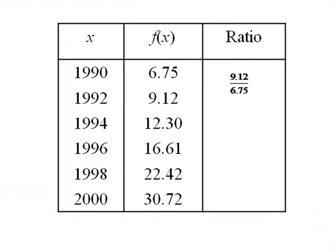So we do 9.12 over 6.75, which is about 1.3511. 12.30 over 9.12, which is about 1.3487.